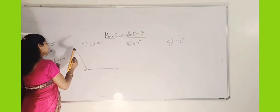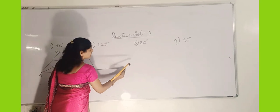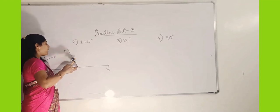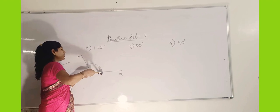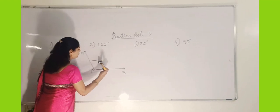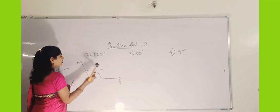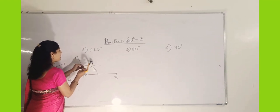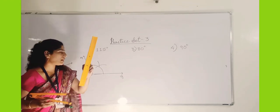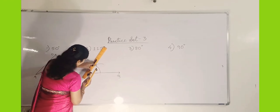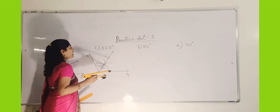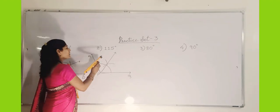Again, the same procedure: give a name to the angle, then take the pointed point of the rounder on the vertex, draw an arc to get two points on the arms. Keep the pointed point of the rounder on one point and draw an arc, then draw another arc from the other point to bisect it. Join the vertex to the intersection point with the scale. This ray bisects the angle into two equal parts — these two angles will be equal.